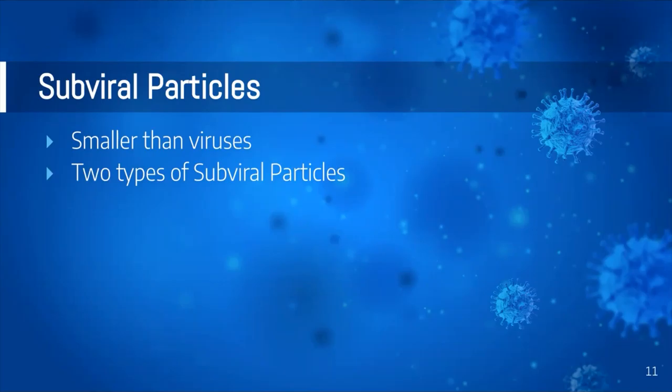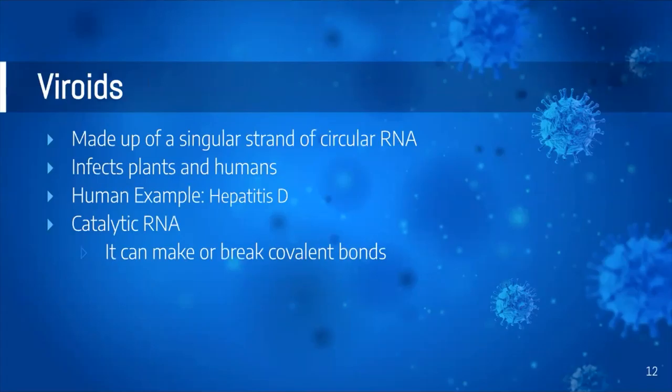So what are subviral particles? There are two types: viroids and prions. First, viroids. Viroids are smaller than viruses because they consist of only one singular circular strand of RNA. Before, viroids were only infecting plants, but now they are also being found in humans — specifically in the case of hepatitis D.